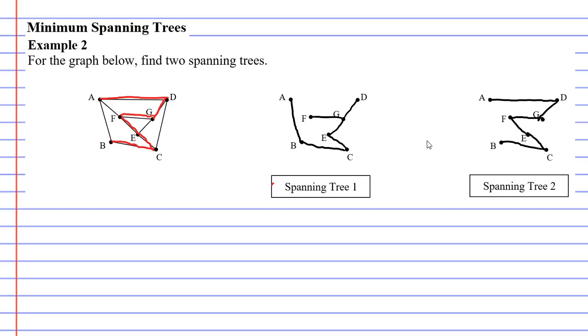And we can see when we look at both of them, all the vertices are connected, there are no cycles, there are no loops, and there are no multiple edges.